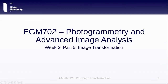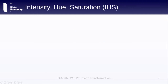Hello and welcome to EGM 702, Week 3, Part 5, Image Transformation. In EGM 713, and in the previous lectures of this class, we've normally thought about images as being RGB composites. That is, the color that we see is made up of a red component, a green component, and a blue component. This is not the only color system that we can use, though.